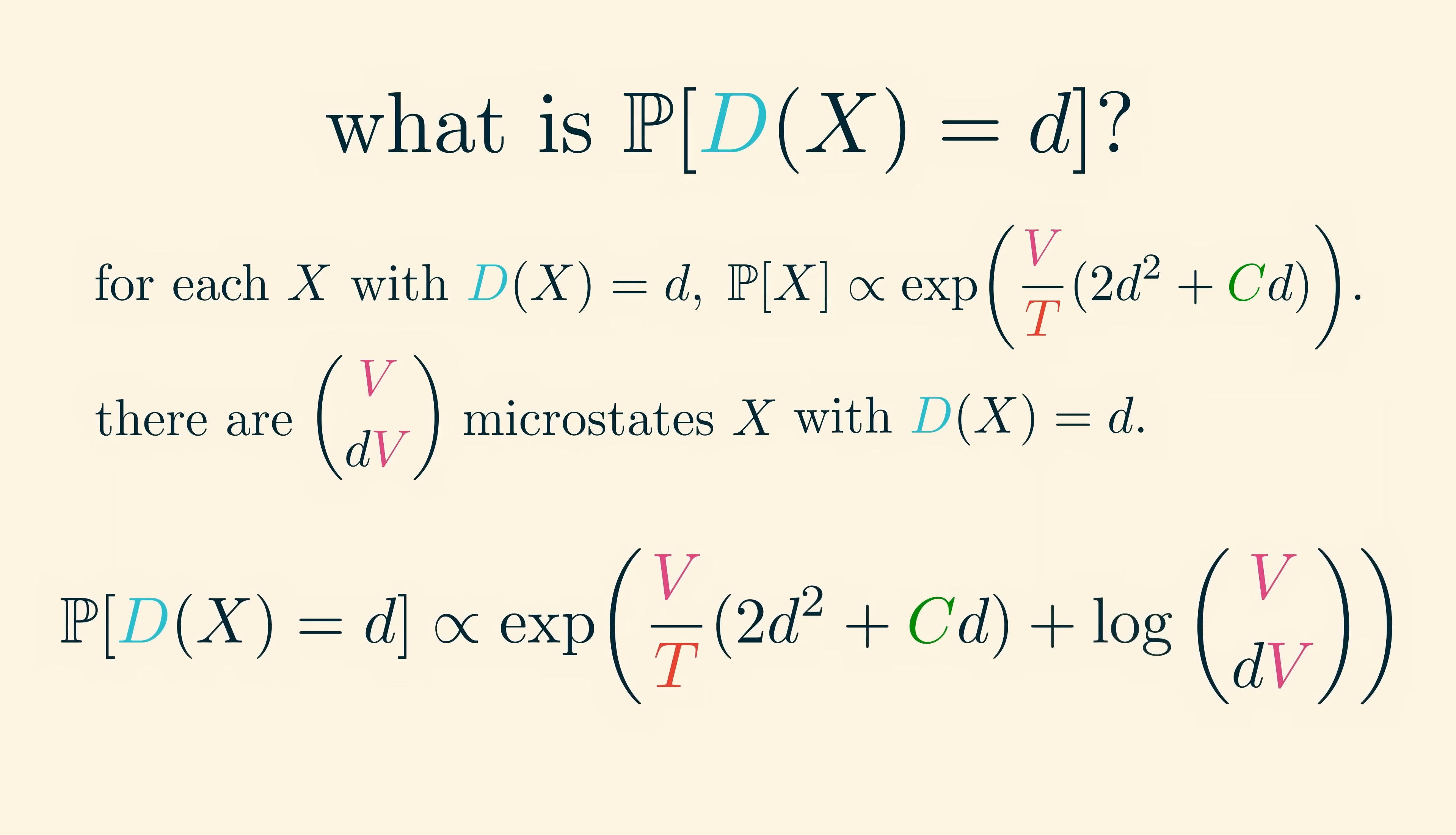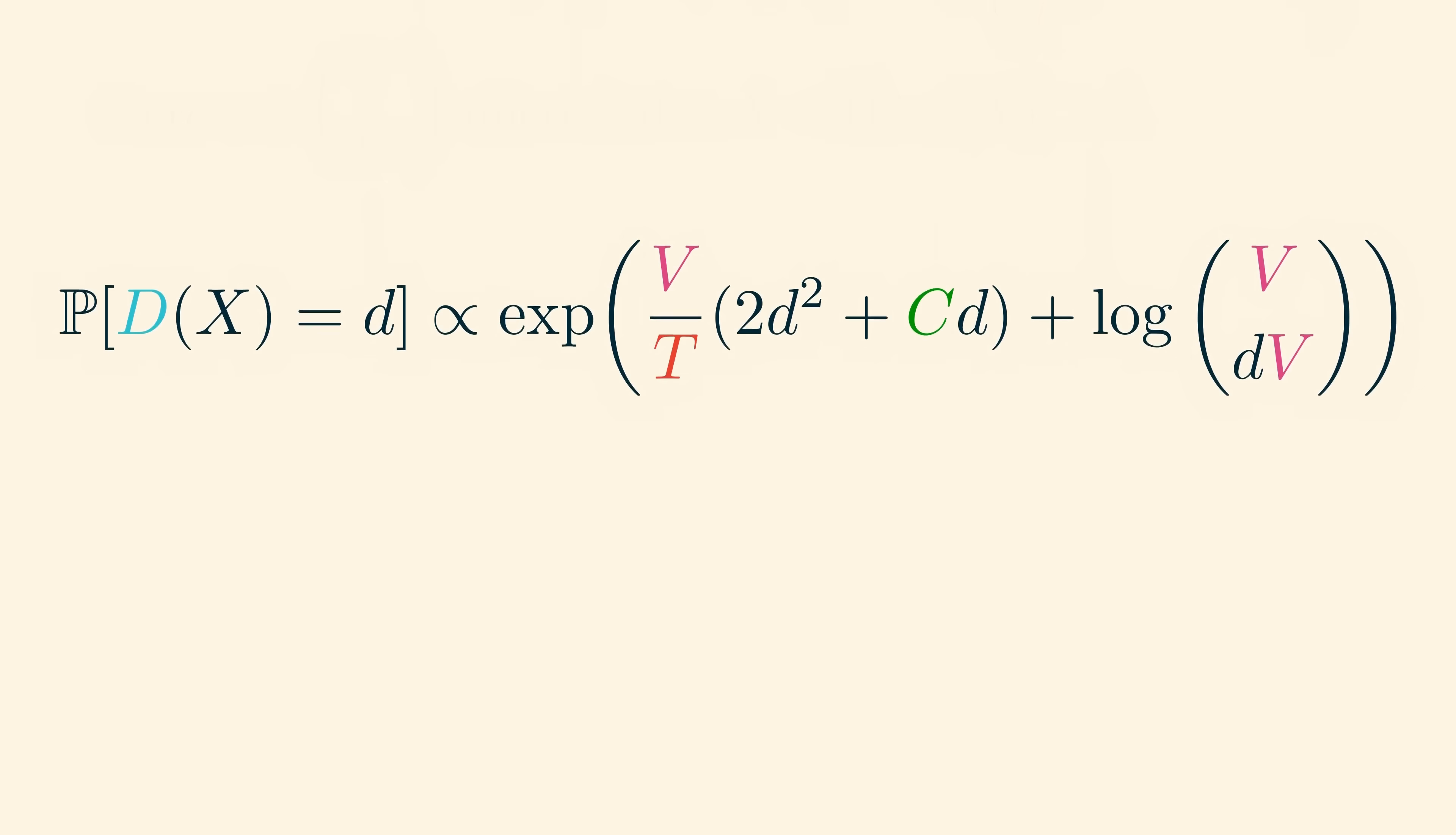Let's simplify by putting everything in the exponent using a logarithm. We find that the probability of seeing density little d is proportional to the exponential of v over t times 2d squared plus cd plus log of v choose dv. Let's just pause here for a minute to see what we've got. We can interpret the first term here as minus 1 over t times the energy of microstates with density d, and the second term as the entropy of microstates with density d. In other words, this is the same type of problem we were discussing earlier in the previous video. Maximizing this is the same as minimizing e minus t times s, which is the free energy.